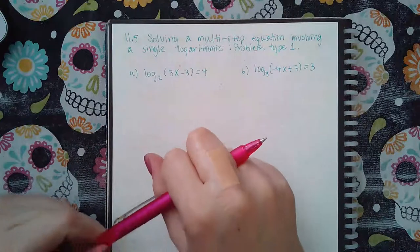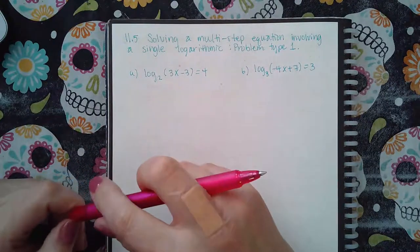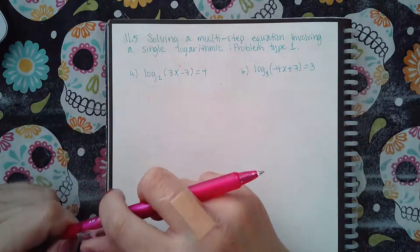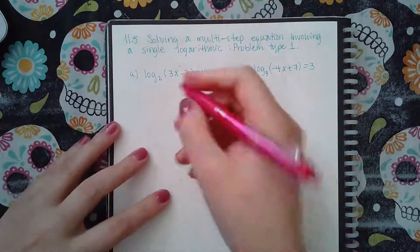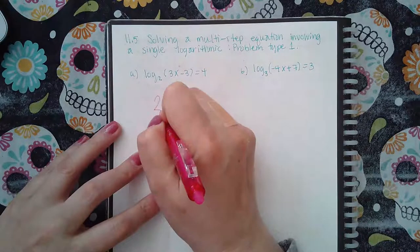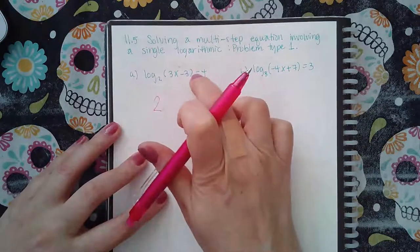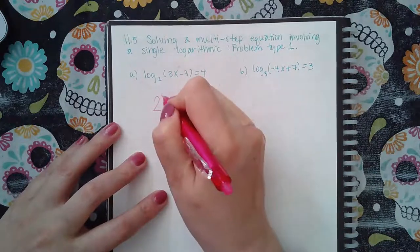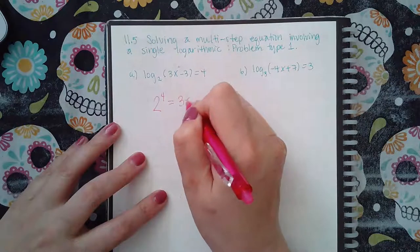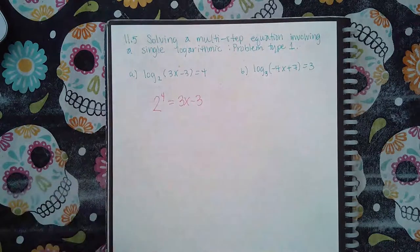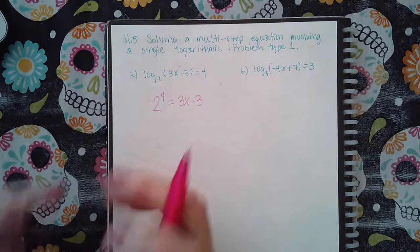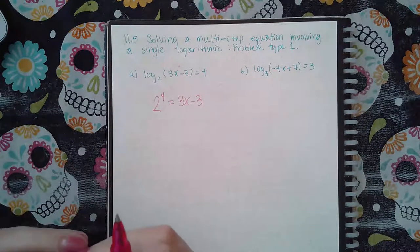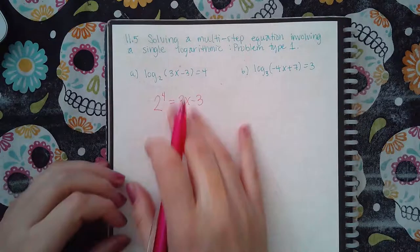So if I can't do the change of base formula, the only other thing that I can do is use the definition of a logarithm to rewrite this as an exponential. The base stays the base, a log is equal to the exponent, so the 4 is the exponent, and then the argument goes over to the other side. Now I no longer have an equation where I can't change it to plug it into the calculator.